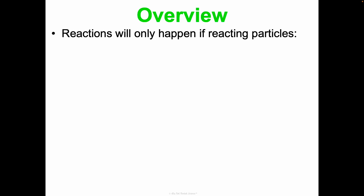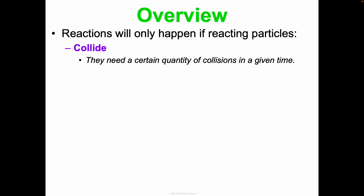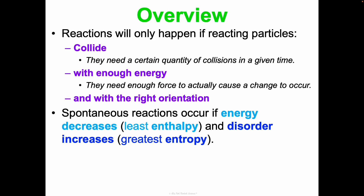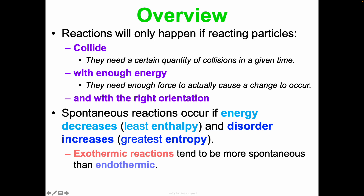As we have said in several previous units, reactions will only happen if reacting particles collide, and they need to have a certain quantity of collisions in a given time, and they need to collide with enough energy — enough force to actually cause a change to occur — and they need to collide with the right orientation. This is all part of collision theory. Spontaneous reactions occur if energy is going to decrease, so we're looking for the least enthalpy, and they'll occur if disorder increases, so we're looking for the greatest possible entropy. Because of this, exothermic reactions are more spontaneous than endothermic.